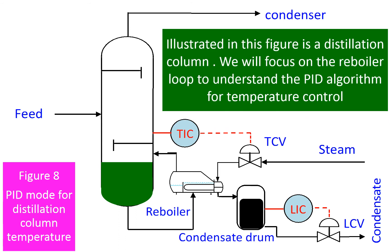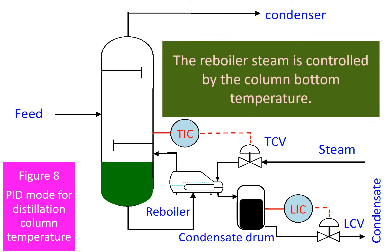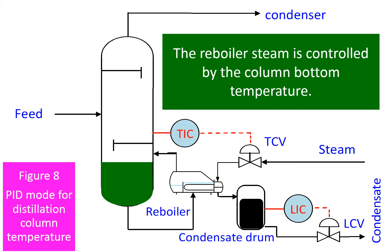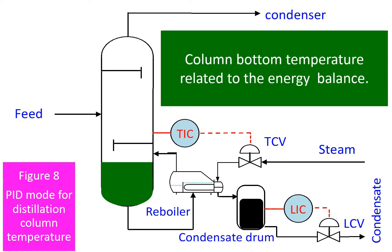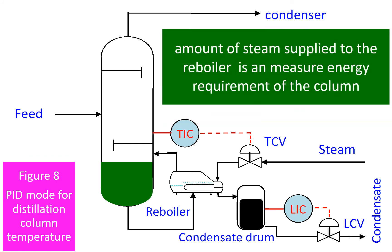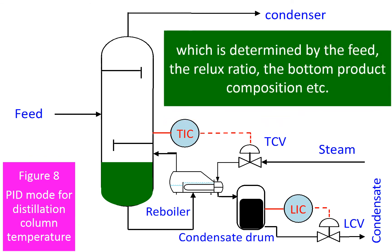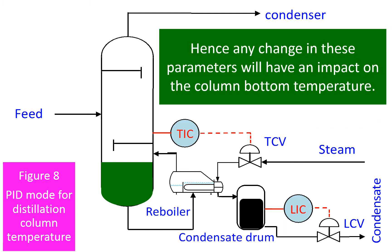The reboiler steam is controlled by the column bottom temperature. Column bottom temperature is related to the energy balance, and the amount of steam supplied to the reboiler is a measure of the energy requirement of the column, which is determined by the feed, the reflux ratio, the bottom product composition, etc. Hence, any change in these parameters will have an impact on the column bottom temperature, and it will take time for the system to respond.